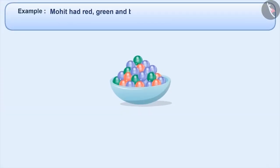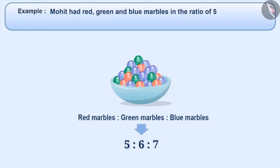Example 1. Mohit had red, green and blue marbles in the ratio of 5 is to 6 is to 7. Find the percentage of green marbles that he had.